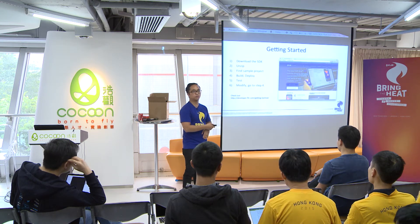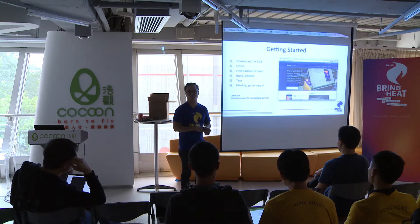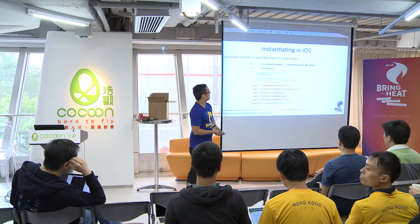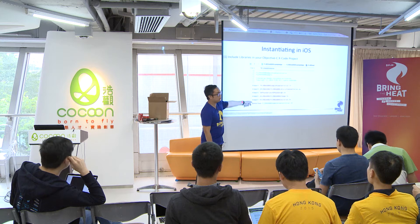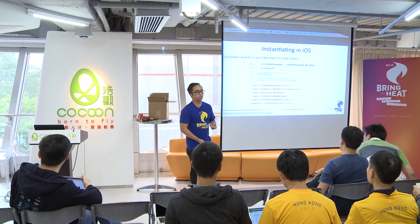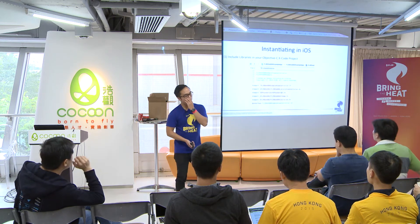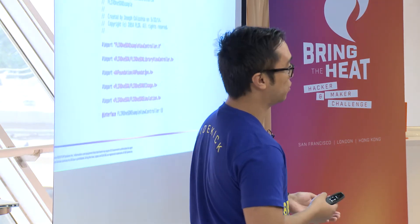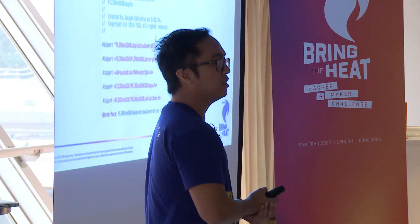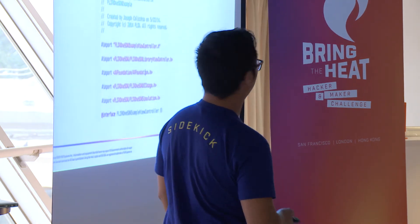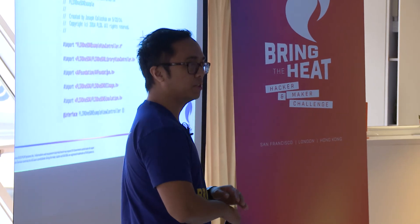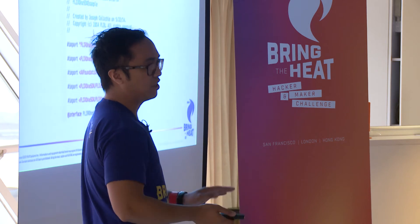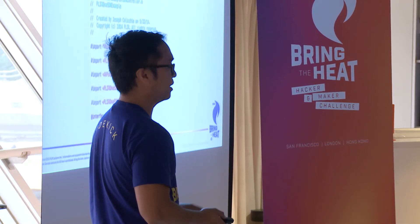Or just copy and paste code, because the project settings are already set up. Instantiating in iOS is pretty straightforward — you include all of our libraries. One thing to note: the FLIR1 SDK has OpenCV bundled with it, so if you try to import OpenCV into a project with FLIR1, there will be namespace collisions. We're trying to fix that, but just take note.